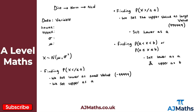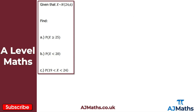So that's everything we need for our introduction to finding probabilities for the normal distribution. Let's now take a look at a couple of practice questions. For question one, we're given the random variable x which follows a normal distribution with a mean of 24 and a variance of 6.